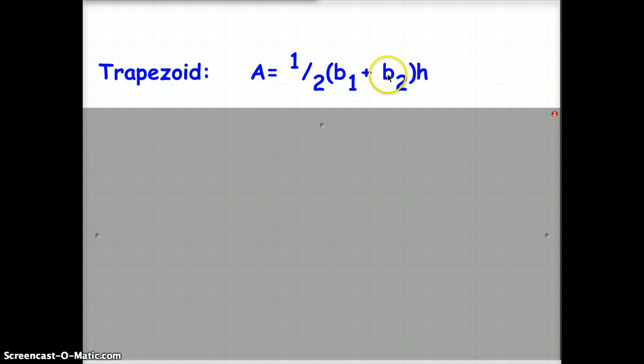So you'll add your bases, divide them by 2, and multiply by the height. That's for a trapezoid.